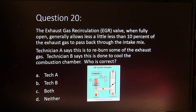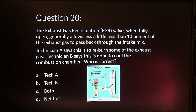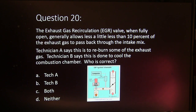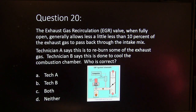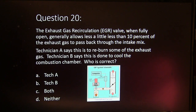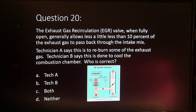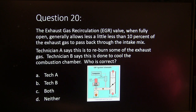Question 20. The exhaust gas recirculation valve, when fully open, generally allows a little less than 10% of the exhaust gas to pass back through the intake mix. Technician A says this is to re-burn some of the exhaust gas. Technician B says this is done to cool the combustion chamber. Who's correct? A, B, both, or neither?